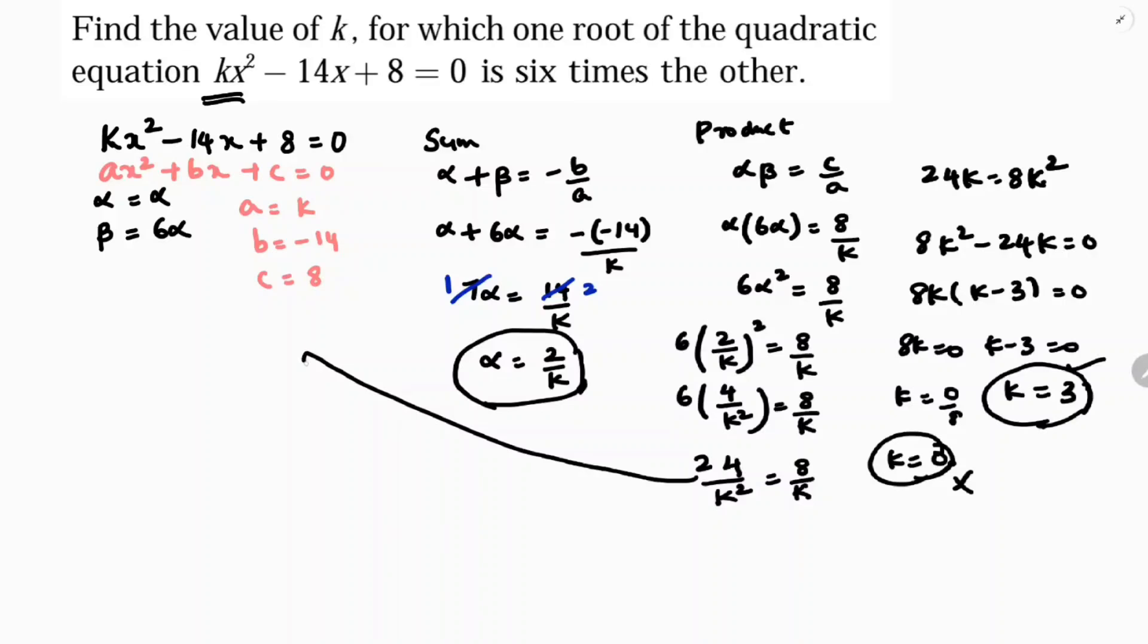You can simplify this step in another method also. From 24/k² = 8/k, you can cancel one k with k. 24/8 is 3. So we are left with 3/k = 1. If we cross multiply, k = 3. So in this way we can simplify. The value of k is 3.